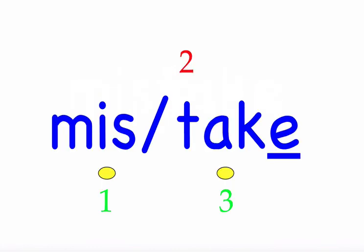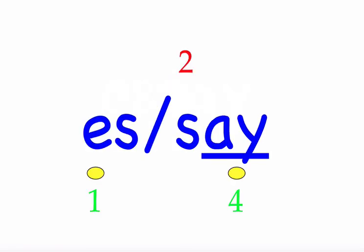The next word is 'essay.' The class had to write an essay on the theme. First syllable 'es' — two sounds, E-S. Second syllable 'say' — two sounds, S-A-Y. Mark the word. Essay.